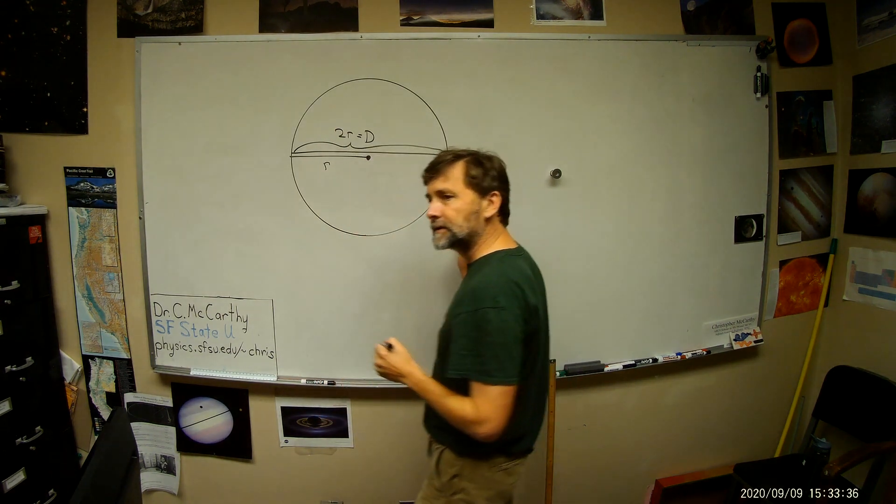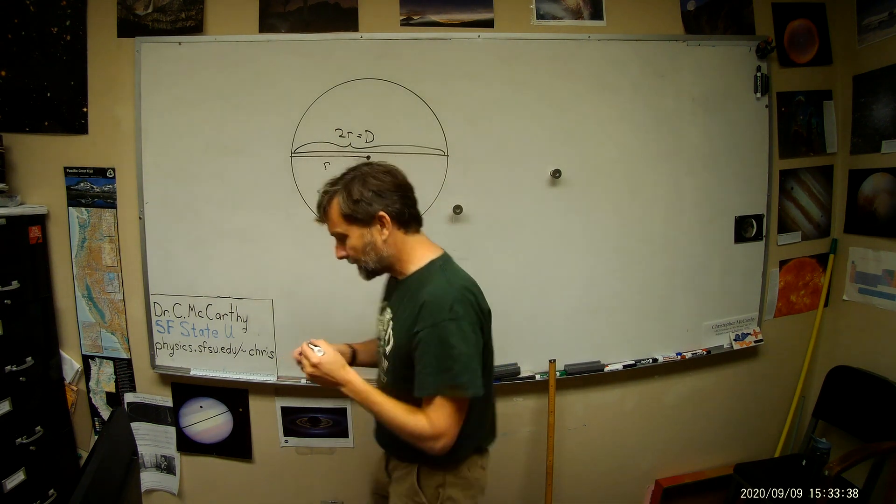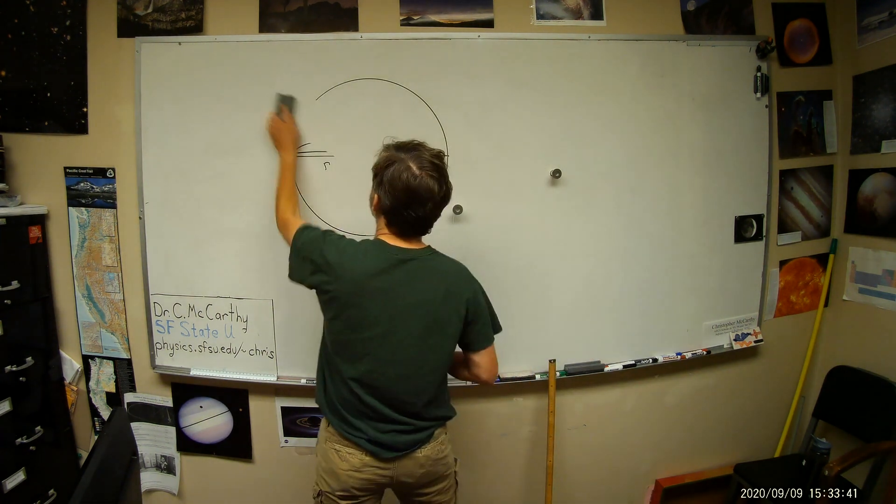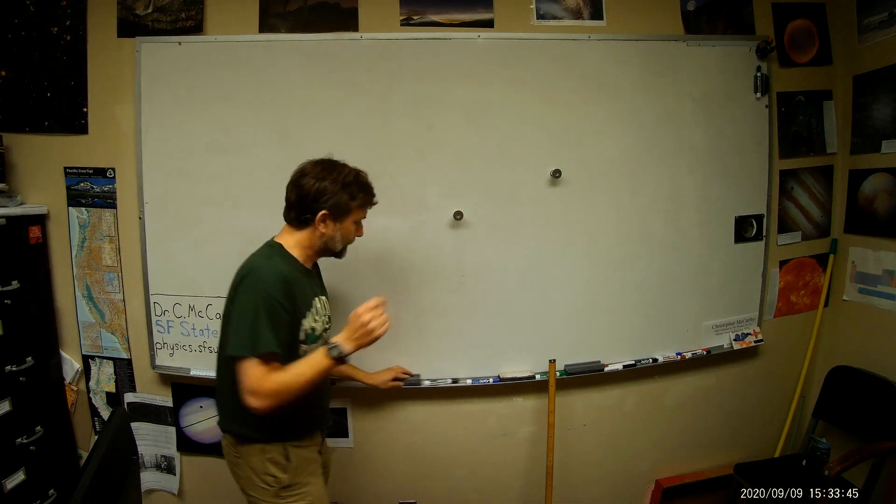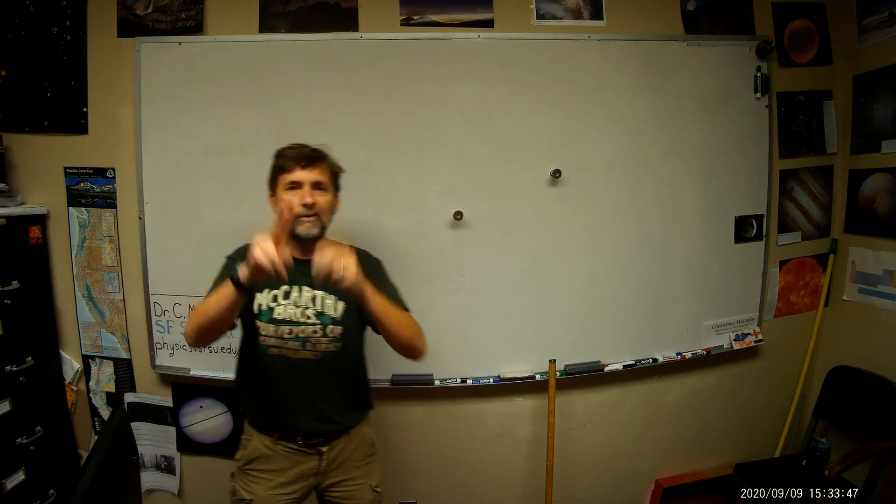Okay, so that's circles, but what about an ellipse? Well, you can draw an ellipse also, but instead of having one center, an ellipse has two centers.